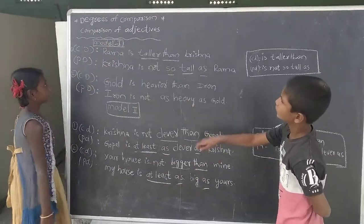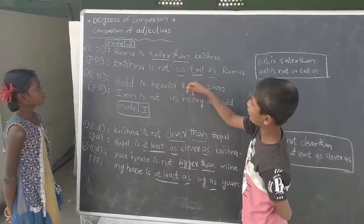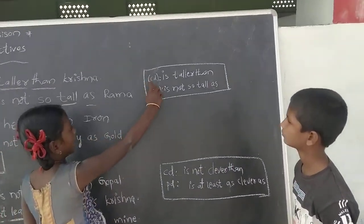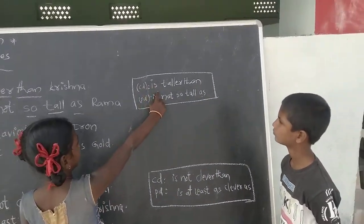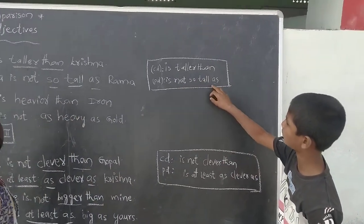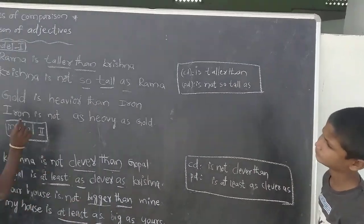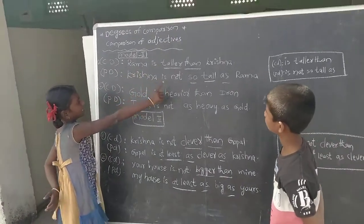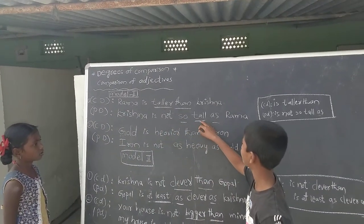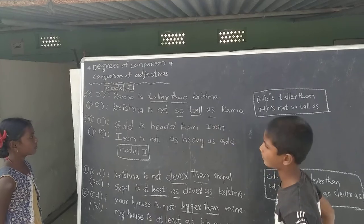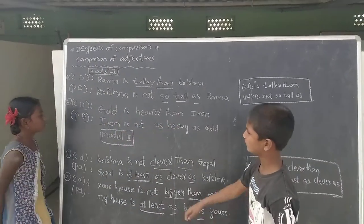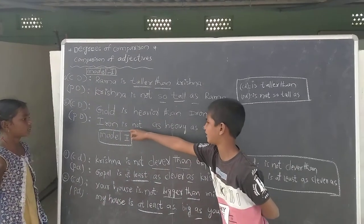Degrees of Comparison — Comparison of Adjectives, Model 1. Comparative degree: 'is taller than.' Positive degree: 'is not so tall as.' Example — Comparative degree: Rama is taller than Krishna. Positive degree: Krishna is not so tall as Rama. Comparative degree: Gold is heavier than Iron. Positive degree: Iron is not as heavy as Gold.